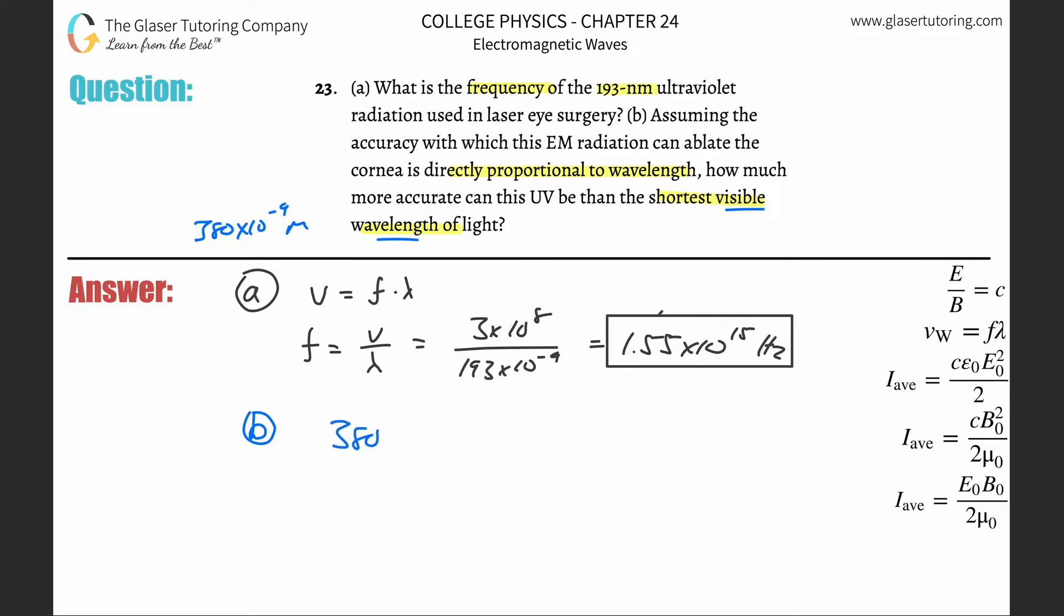When I do the division here, this is basically just 380 divided by 193. This works out to be about 1.969 or so.